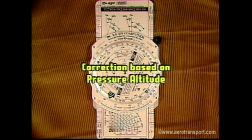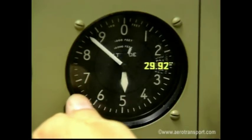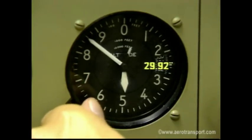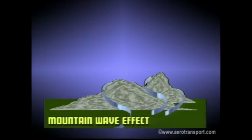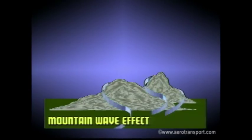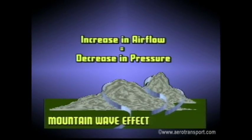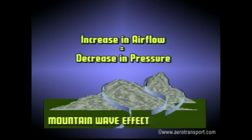To find the pressure altitude at any given time, simply set the barometric scale to 29.92. Mountains can affect the operation of the altimeter, resulting in readings that are as much as 3,000 feet too high. The mountain effect occurs when wind is deflected around large mountain peaks or through valleys. Remembering Bernoulli's principle — which states that an increase in airflow causes a decrease in pressure — the instrument, sensing the lower pressure, gives you a false reading which is too high.